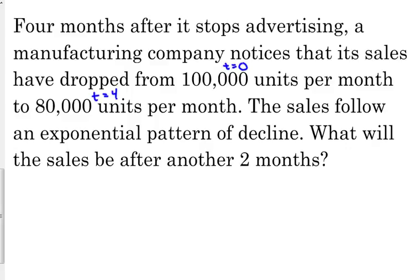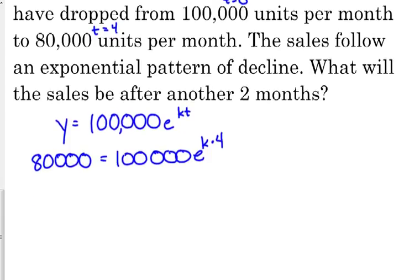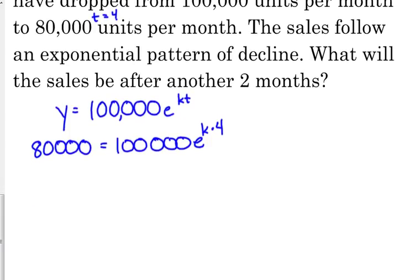So that means we've got Y equals, our initial value was 100,000, E to the K times T. So we need to plug in our value at four and solve for our proportionality constant.